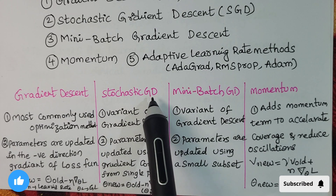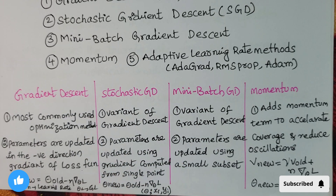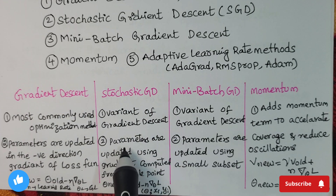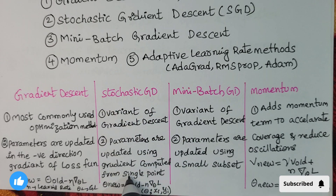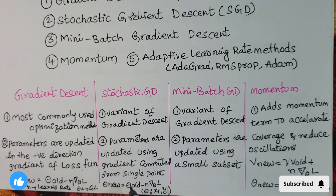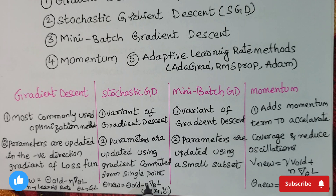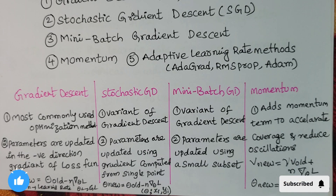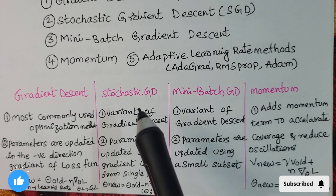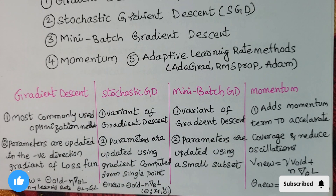Stochastic gradient descent (SGD) is a variant of gradient descent. Parameters are updated using the gradient computed from a single data point. The formula is: θ_new = θ_old − η·∇_θ L(x_i, y_i), where the gradient is computed from a single sample (x_i, y_i).